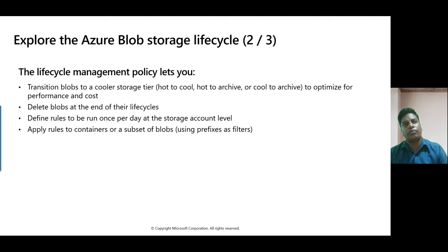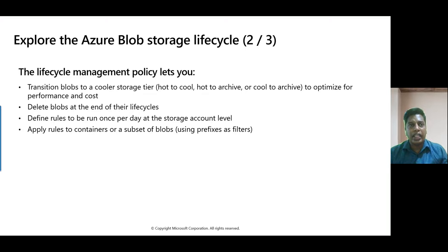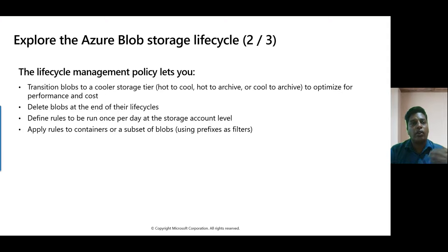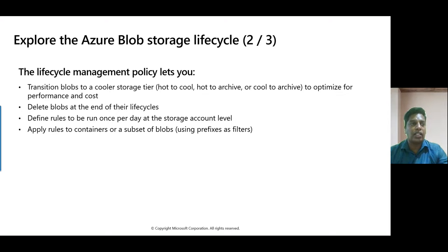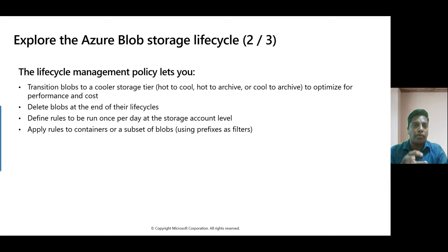In some cases, we store files — like reports, archival data, or documents — where in the initial period we use those files very frequently, but over time the frequency of access reduces. After some time, we access those files maybe once or twice a year. In that case, in the initial period I can put those files into the hot tier, then later move them into the cool tier, and eventually move them into the archive tier to save costs.